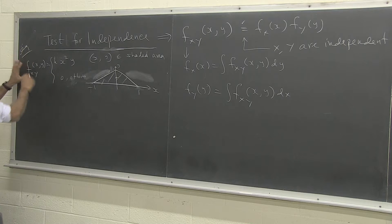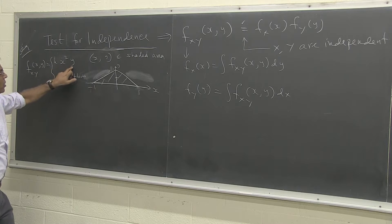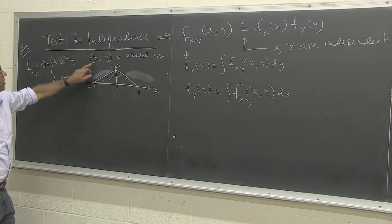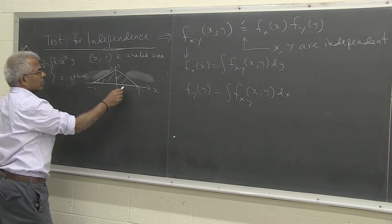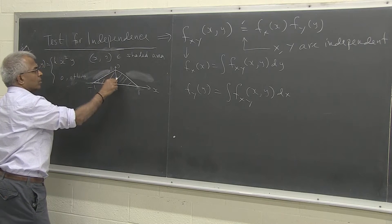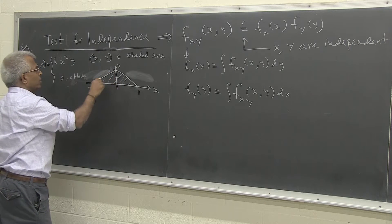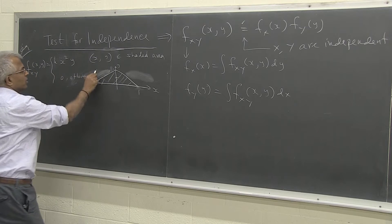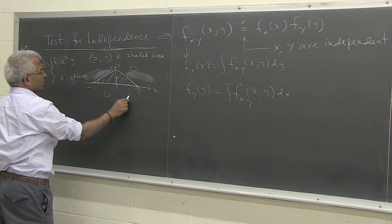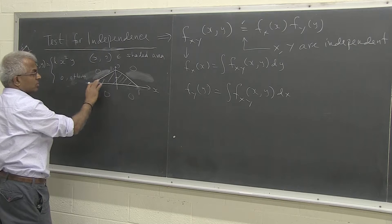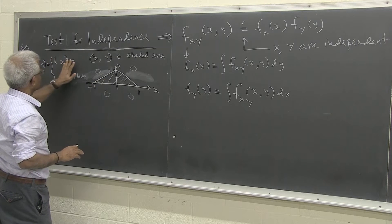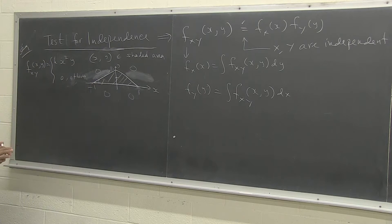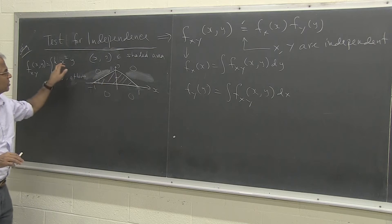Here is an example. The joint density function is given to be k·x²·y when x and y belong to this triangular shaded region, and it is 0 everywhere else. The density function is only non-zero in this region, and notice it is not a constant — it depends on the x value and the y value.